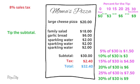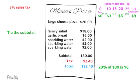Since you're satisfied with the service, you decide to make a 20% tip. 10% of $30 is $3, and 20% of $30 is $6, so you're going to make a $6 tip.